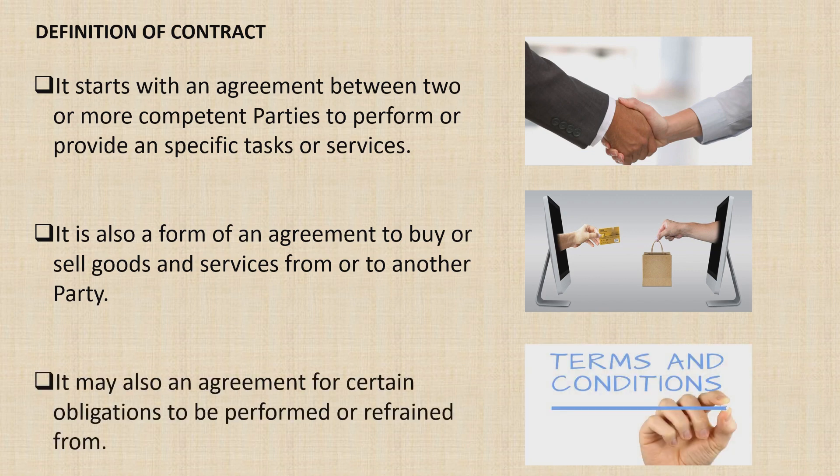It may also be an agreement for certain obligations to be performed or refrained from. One example is for the construction of a masonry wall. Contractor A shall construct the masonry wall including the plastering, but when it comes to painting works, it shall be done by Contractor B.